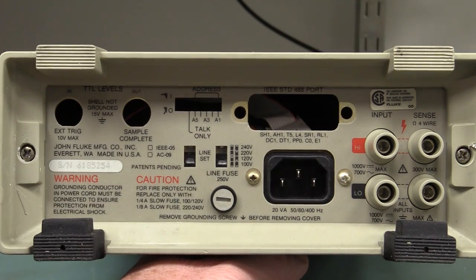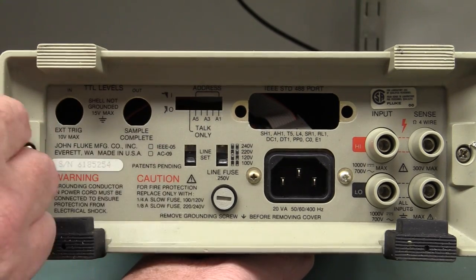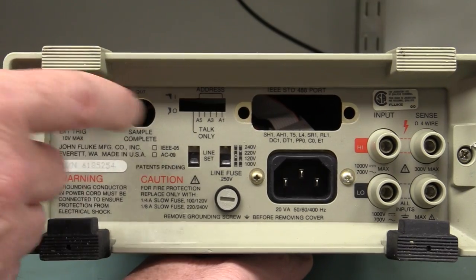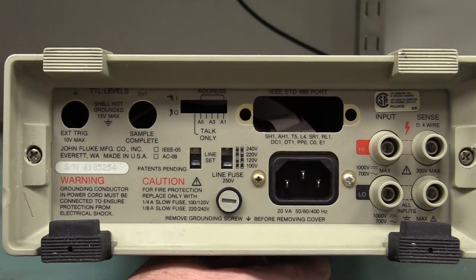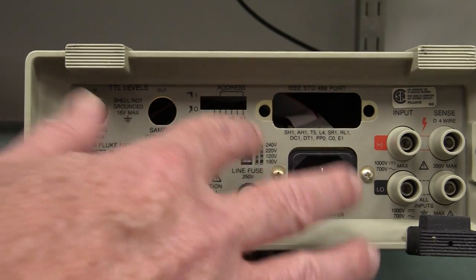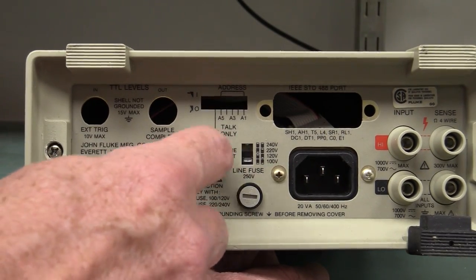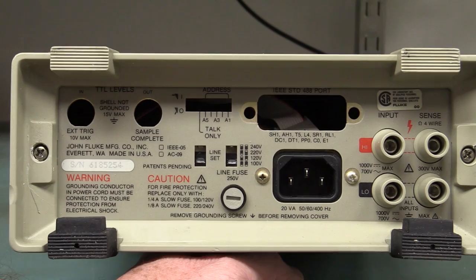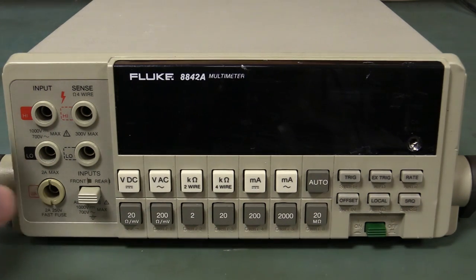Now this one seems to be missing a few things. The GPIB of course is gone, and whether or not it originally had it, there's a cable flapping around in the breeze in there, but no external trigger or sample complete. Made in the USA! And a good thing about buying these internationally is it does have a switchable international voltage. It's got the four wire sense on the back as well, you can switch between the front and the back terminals, handy. So let's power this up and see what we get.